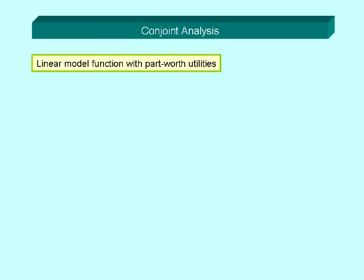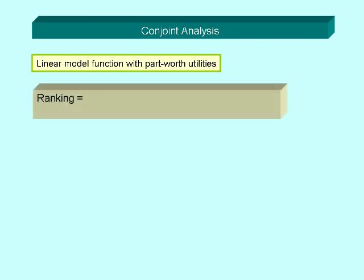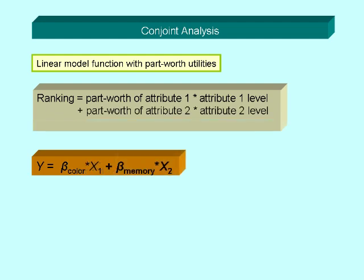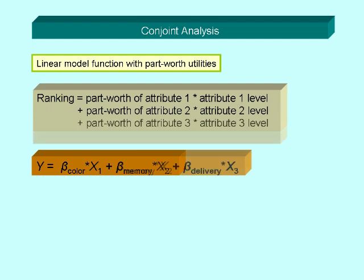Then we use a simple linear model function to describe the ranking and to find the part-worth utilities. The ranking is expressed as part-worth of attribute one, color, multiplied by the level for attribute one, minus one or plus one, plus the part-worth of attribute two multiplied by the level for attribute two, plus the part-worth of attribute three multiplied by the level for attribute three, plus a constant.